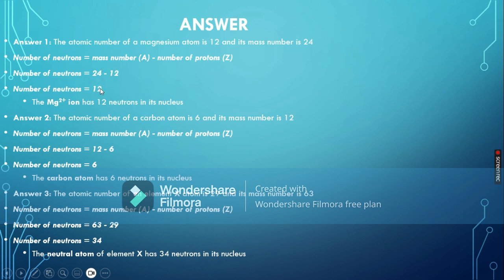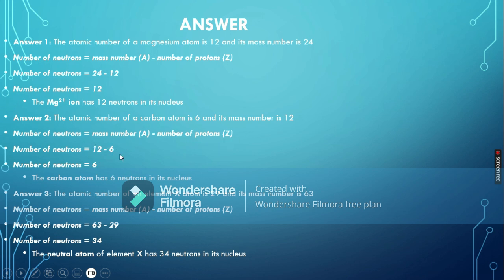For magnesium: number of neutrons = 24 − 12 = 12 neutrons in its nucleus. The charge on the ion does not affect the number of neutrons. For carbon: atomic number is 6 and mass number is 12, so number of neutrons = 12 − 6 = 6 neutrons. For element X with atomic number 29 and mass number 63: number of neutrons = 63 − 29 = 34. Therefore the neutral atom of element X has 34 neutrons in its nucleus.